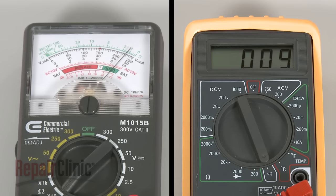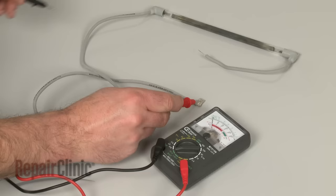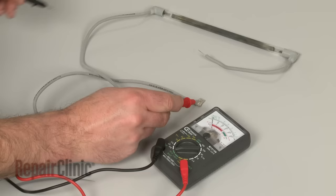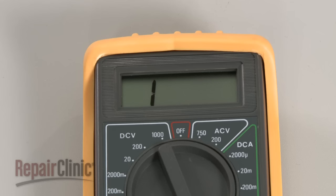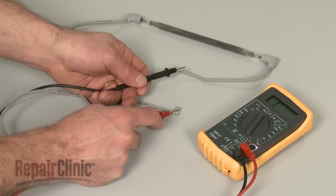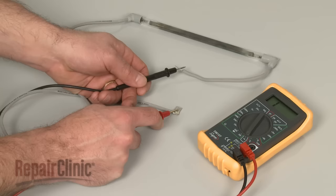If the meter reading shows a result between zero and 50 ohms of resistance, the component has continuity. If the needle does not move, or the digital display does not change significantly, there is no continuity, which means the component is burned out and will need to be replaced.